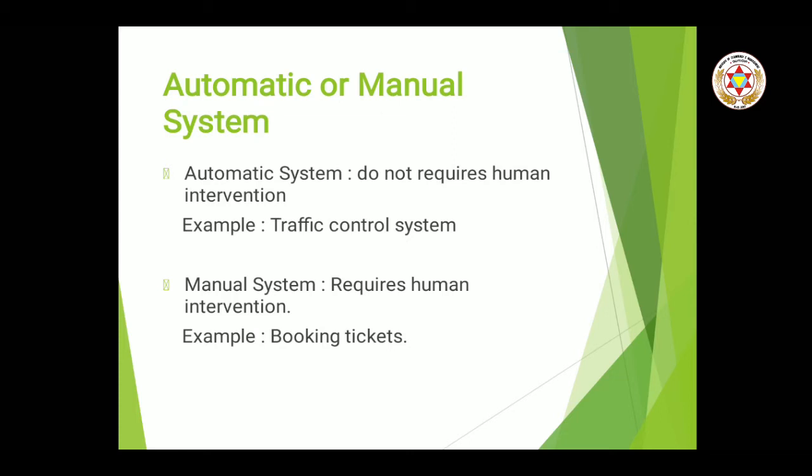Manual system is the one where human input has to be processed and then it comes to the output. For example, ticket booking at a railway station — when you go to the railway station to book a ticket, you have to tell where you want to go, then at the counter, a human uses the system to book the ticket. That means a human is required at that system to operate it — that is manual system.